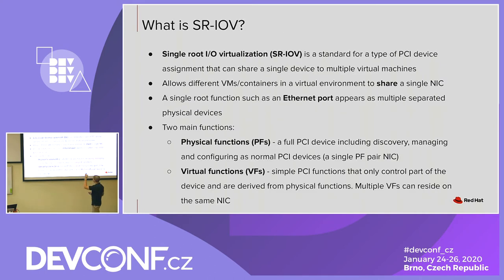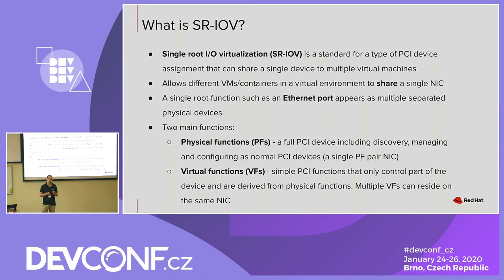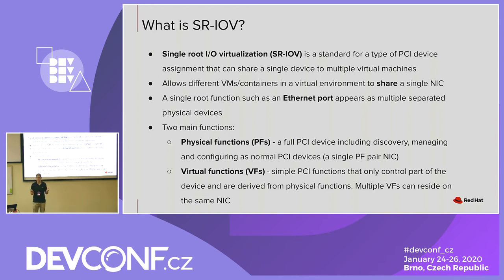SR-IOV, formally defined as Single Root I/O Virtualization, is a standard PCI device type that allows a single physical device to be shared by multiple virtual machines. You take a physical device and slice it into multiple containers or VMs. They all share the same physical hardware, but each feels as if it has its own physical NIC — which is really just a slice, a Virtual Function (VF). We talk about PFs (Physical Functions) and VFs (Virtual Functions). The PF is the PCI device — the physical NIC itself; you can only have one PF per physical NIC. VFs are the slices — you can have multiple VFs on a single physical NIC.